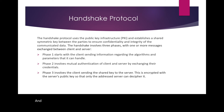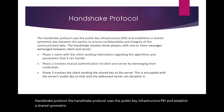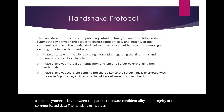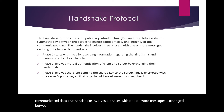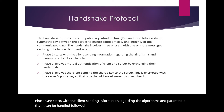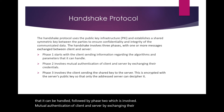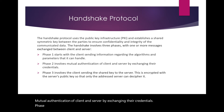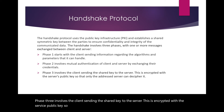Handshake protocol: The handshake protocol uses the public key infrastructure (PKI) and establishes a shared symmetric key between the parties to ensure confidentiality and integrity of the communicated data. The handshake involves three phases with one or more messages exchanged between client and server. Phase 1 starts with the client sending information regarding the algorithms and parameters it can handle, followed by Phase 2, which involves mutual authentication by exchanging credentials. Phase 3 involves the client sending the shared key to the server, encrypted with the server's public key so that only the addressed server can decipher it.